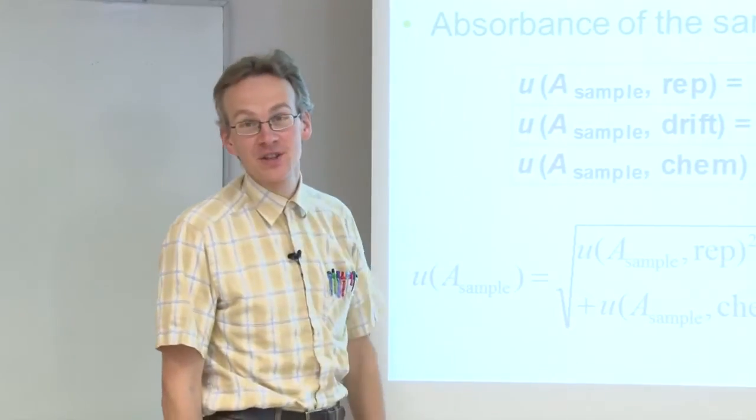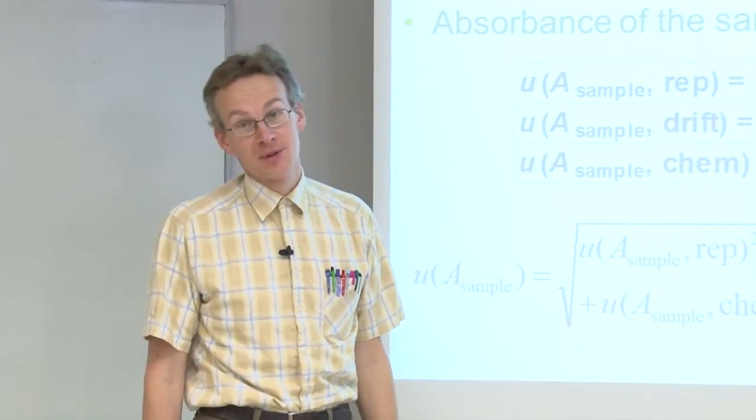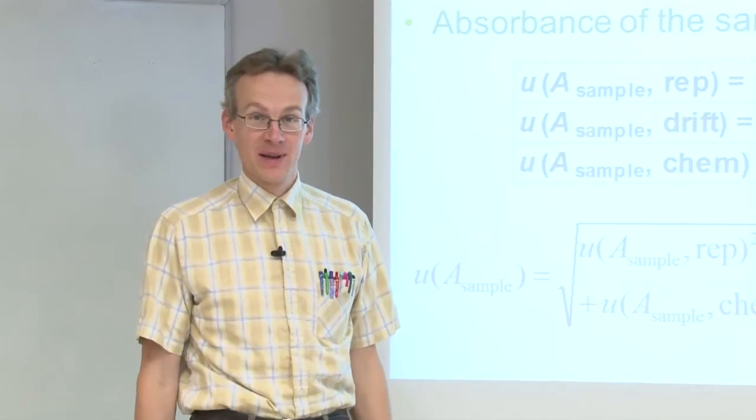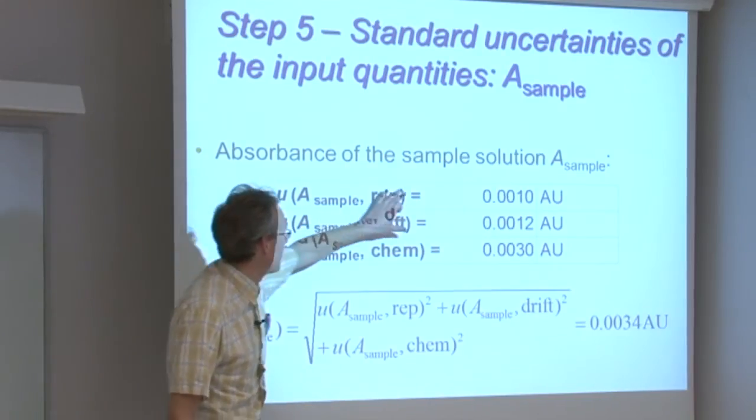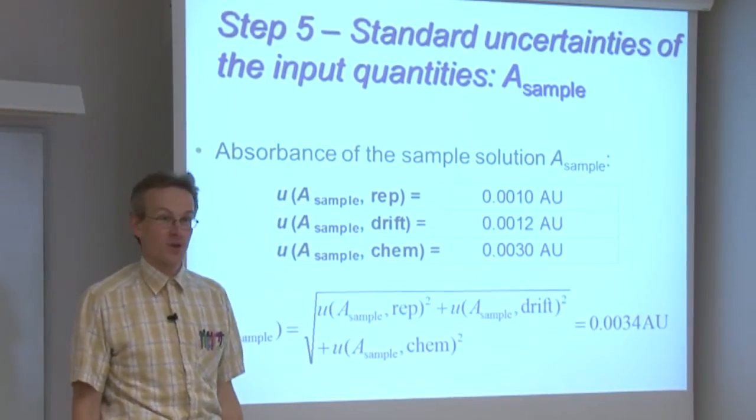The drift uncertainty can likewise be determined in the laboratory, but also it sometimes can be found in the documentation of the spectrophotometer. These values correspond to quite safe estimates for contemporary, normal, usual routine spectrophotometers.